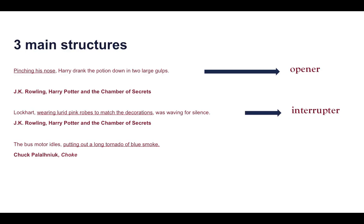And we have that -ing participle phrase there and it really builds that visual image. And the third one you can see is obviously going to be called a closer because it happens towards the end of the sentence. So we'd have the bus motor idles, you could put a full stop there and not have anything else, but instead you put a comma and then there's the -ing phrase towards the end.